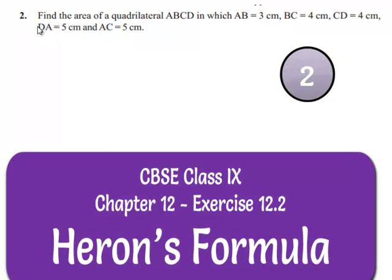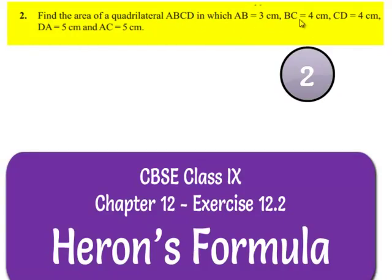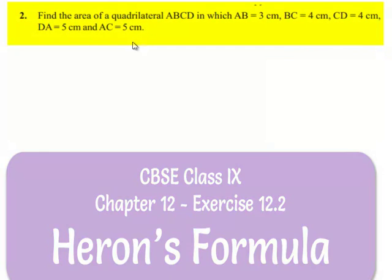Now, let us move on to the second question. Find the area of a quadrilateral ABCD in which AB is equal to 3 cm, BC is equal to 4 cm, CD is equal to 4 cm, DA is equal to 5 cm, and AC is equal to 5 cm.